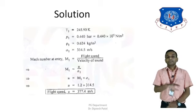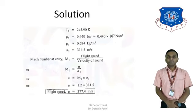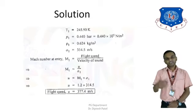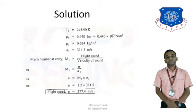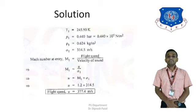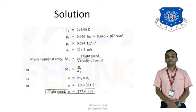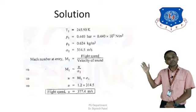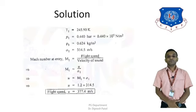Now let us find the flight speed. Since M1 = U / A1, we can write U = M1 × A1 = 1.2 × 314.5 = 377.4 m/s. This is our second finding.